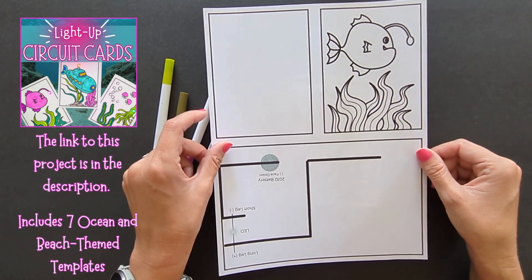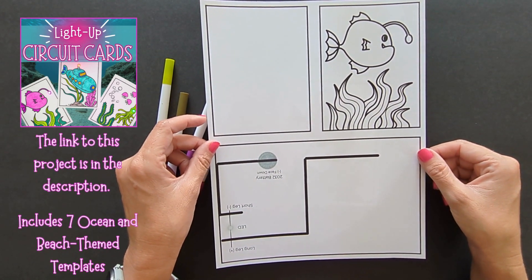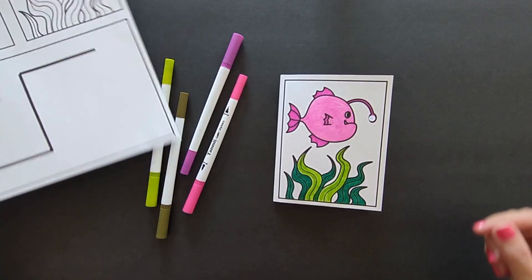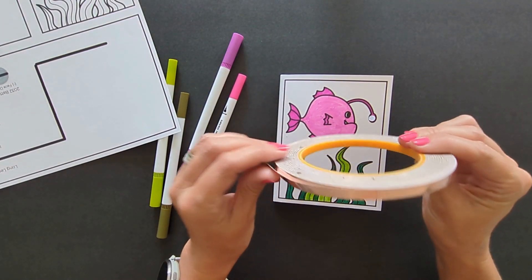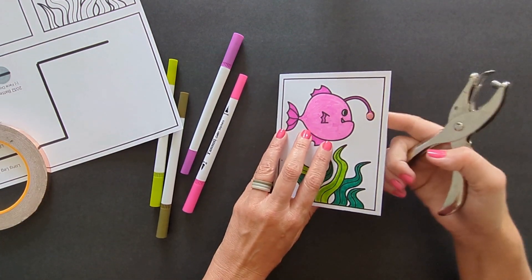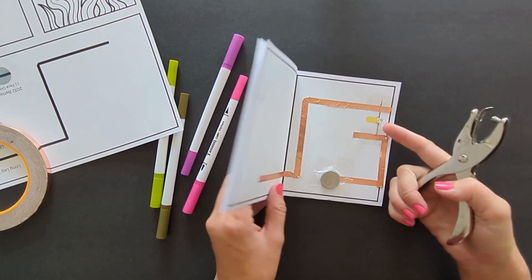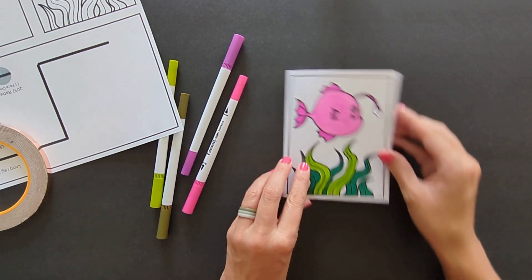First let's gather supplies. You will need the printable template which is linked in the description, your favorite art supplies for coloring the cover, some copper tape and clear tape, a hole punch, scissors, an LED light available in various colors, and a coin battery.